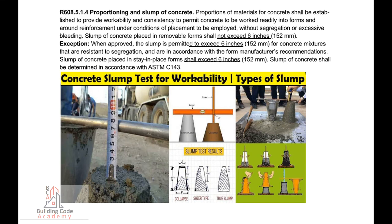R-608.5.1.4, Proportioning and Slump of Concrete. Proportions of materials for concrete shall be established to provide workability and consistency to permit concrete to be worked readily into forms and around reinforcement under conditions of placement to be employed without segregation or excessive bleeding. Slump of concrete placed in removable forms shall not exceed 6 inches (152mm). Exception: When approved, the slump is permitted to exceed 6 inches (152mm) for concrete mixtures that are resistant to segregation and are in accordance with the form manufacturer's recommendations. Slump of concrete placed in stay-in-place forms shall exceed 6 inches (152mm). Slump of concrete shall be determined in accordance with ASTM C143.